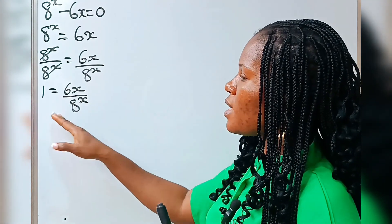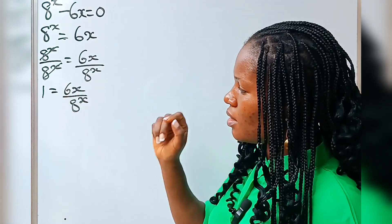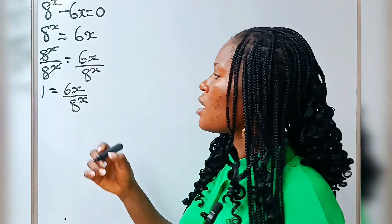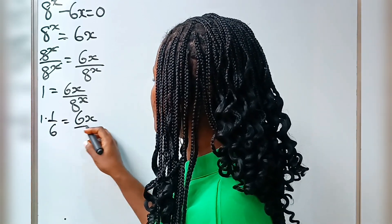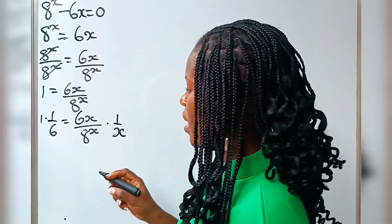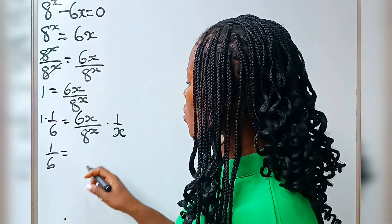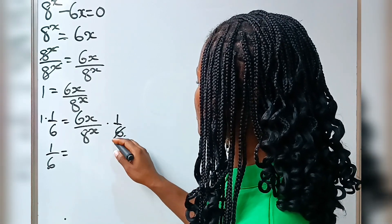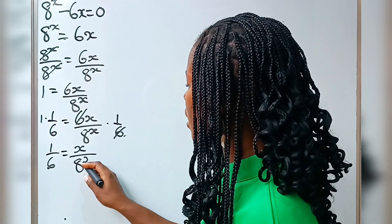Now I want us to multiply both sides of this equation by 1 over 6, because I want to eliminate this 6 so that I have these values of x together. So we now have 1 multiplied by 1 over 6 is equal to 6x divided by 8 to the power of x multiplied by 1 over 6. We cancel the 6s and we have x over 8 to the power of x.